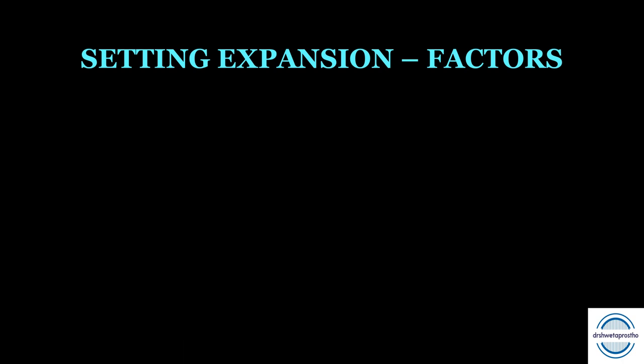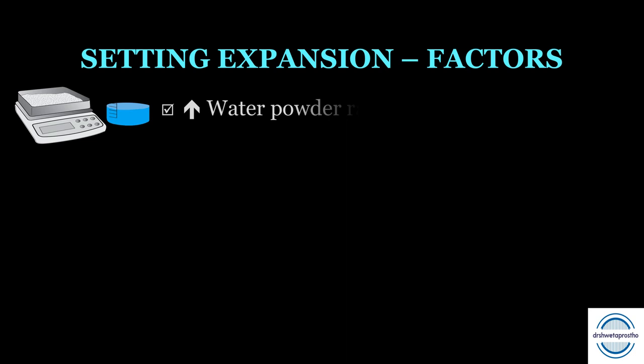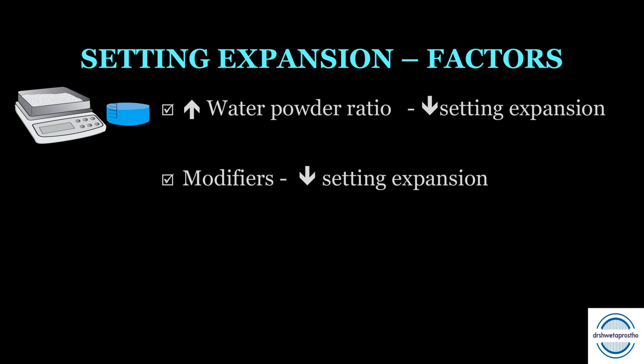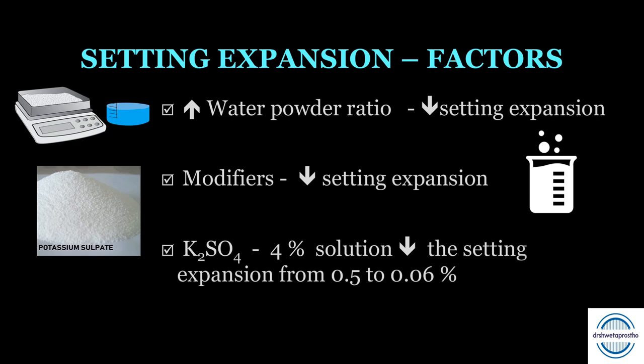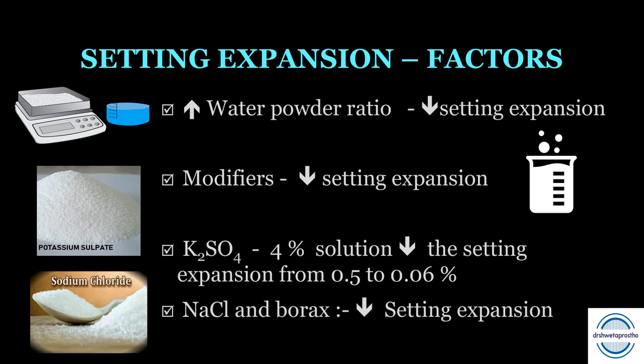Factors controlling setting expansion: First, water-powder ratio — at higher water-powder ratio, fewer nuclei of crystallization are present per unit volume, lowering the setting expansion. Second, modifiers always reduce setting expansion; for example, potassium sulfate (4% solution) decreases setting expansion from 0.5% to 0.06%. Sodium chloride and borax also reduce setting expansion.